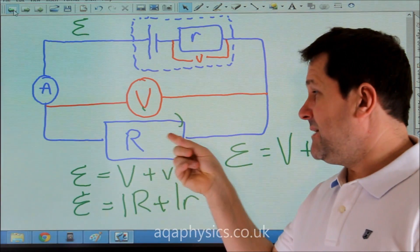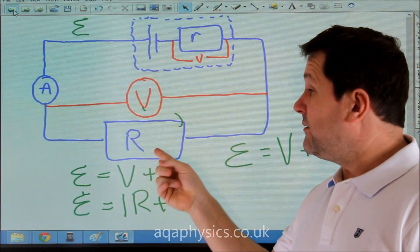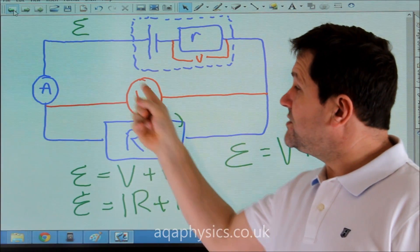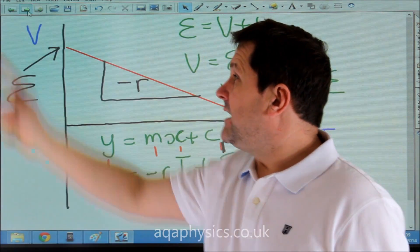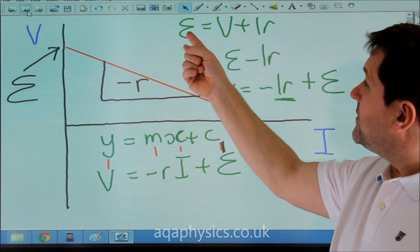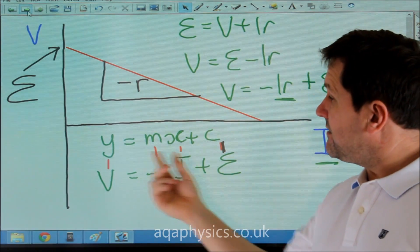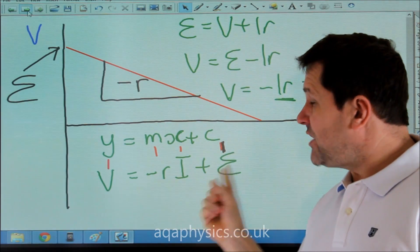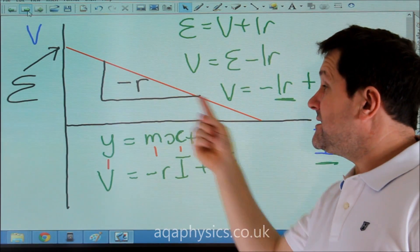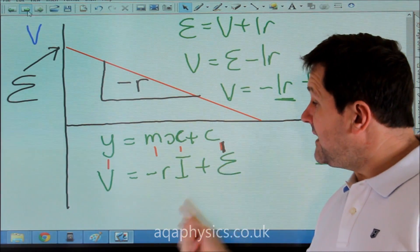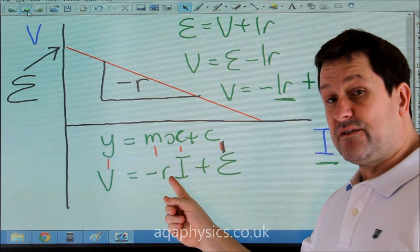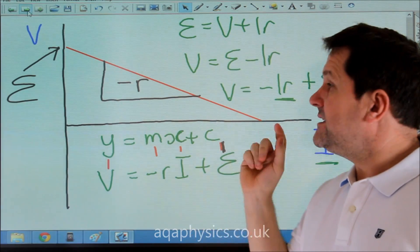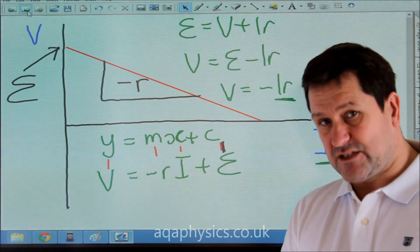So by altering my resistance here and going through a range of resistances, I can take different readings for voltage and current. If I plot them graphically, I can then use this equation, rearrange it to Y equals MX plus C. I could then show that the gradient of this graph gives me the internal resistance of the battery, and that the Y-intercept, where it crosses the Y-axis, tells me the EMF of the battery.